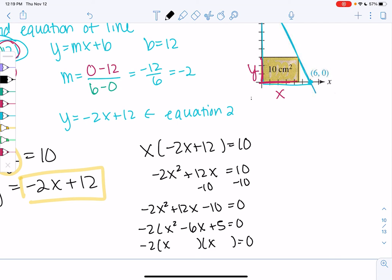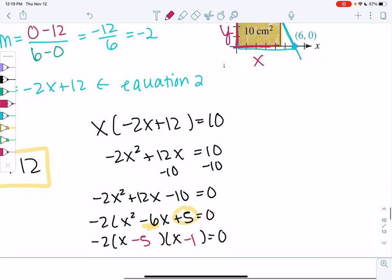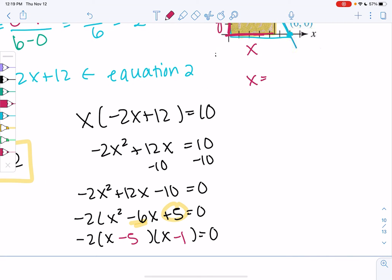So we want a product of 5, a sum of negative 6. Product, sum. So I think negative 5 and negative 1 works. So it looks like we might have two solutions again, provided that they both make sense. Right? So sometimes with applications, you might get a negative solution that doesn't make sense. So we'll make sure both solutions make sense. So we get x equals 5 or x equals 1.